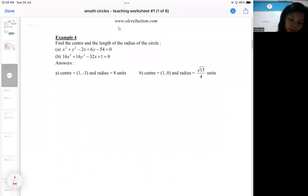So there's an example here. If you look at example 4A, both are coefficient 1. So I would like you to try 4A. But if you look at 4B, the coefficient is not a 1. So I cannot complete square.